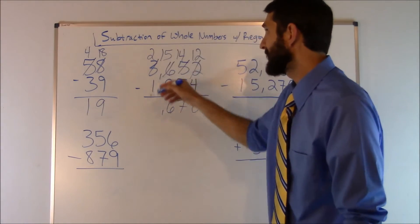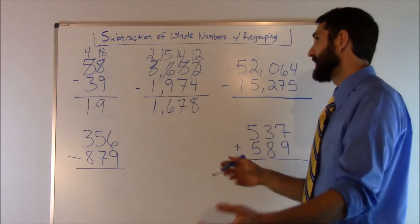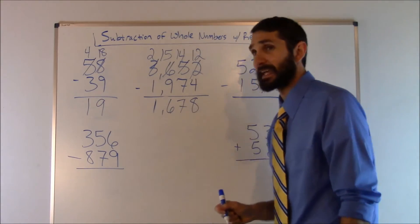Next we have two minus one, and that's going to be a one. That's easy. So 1,678 is the answer to that problem.